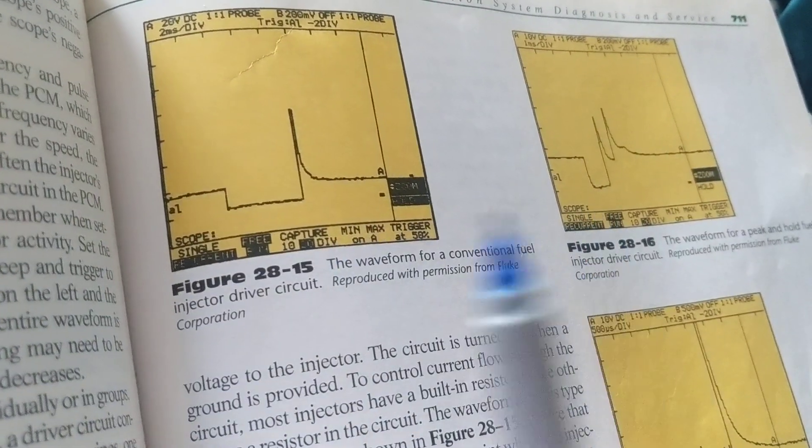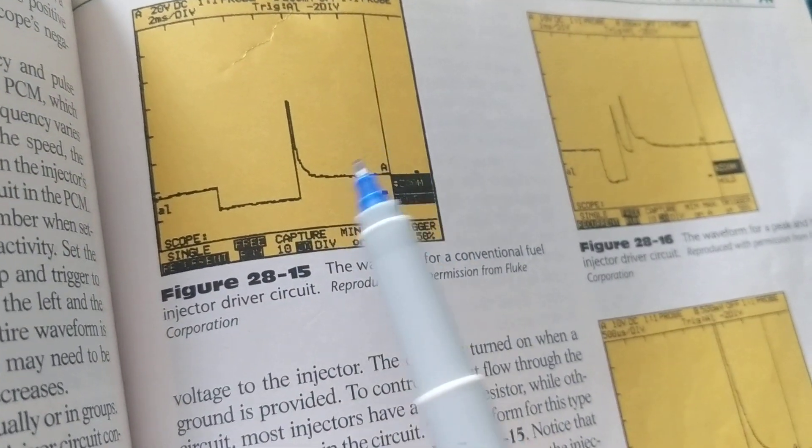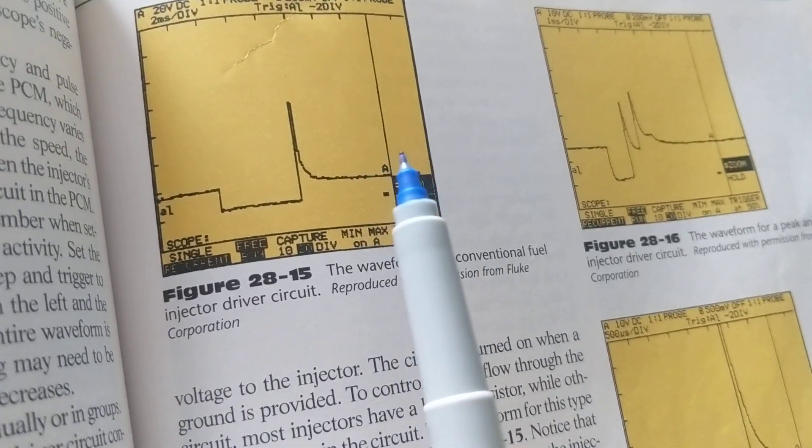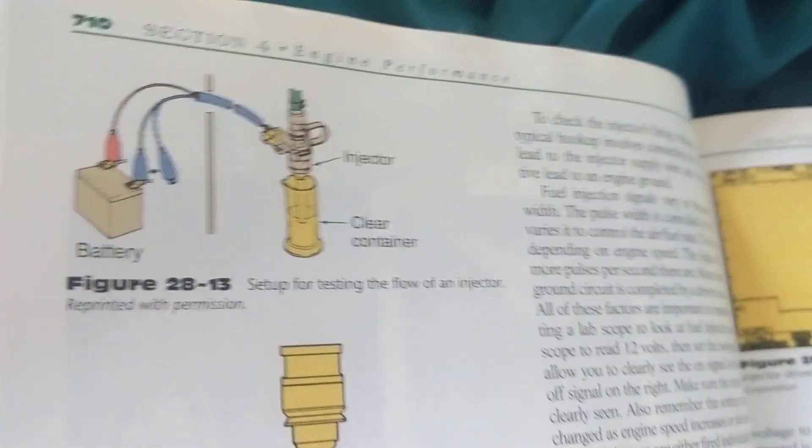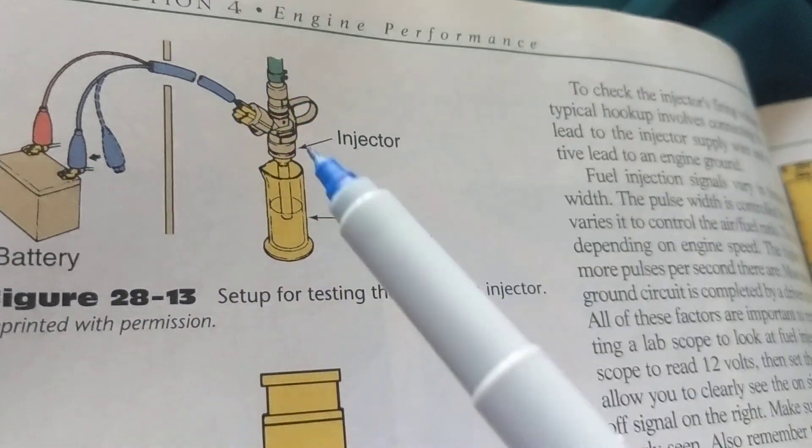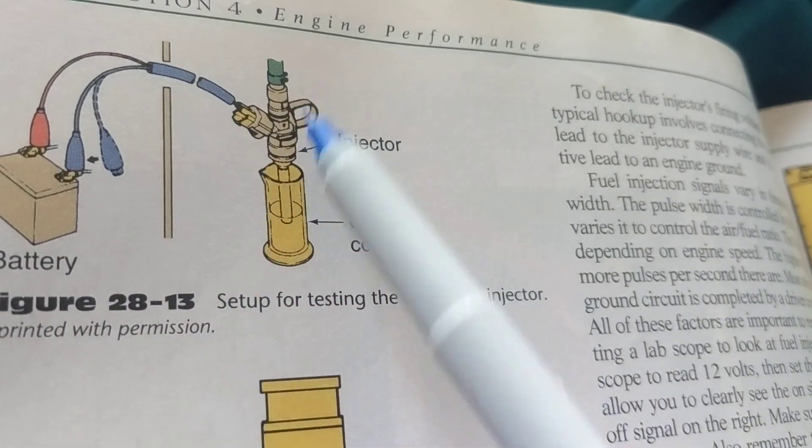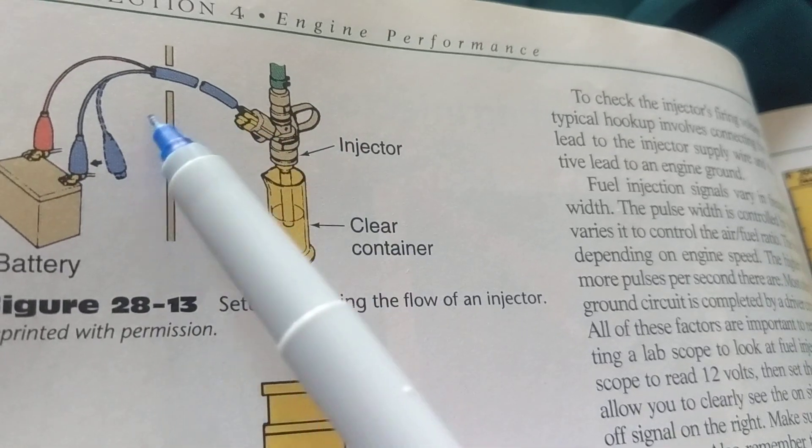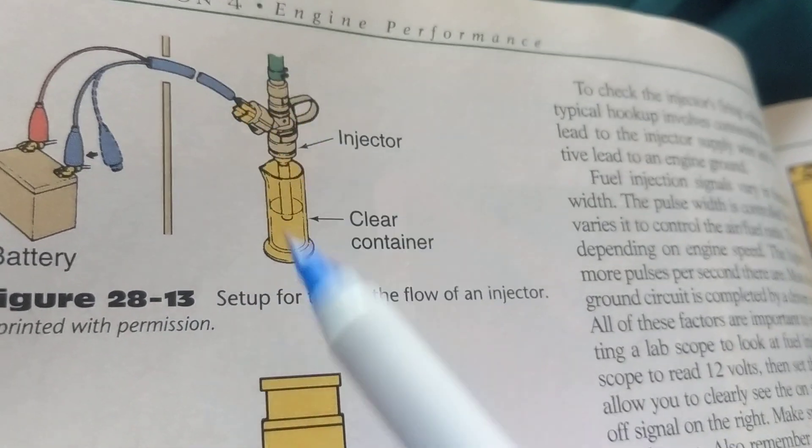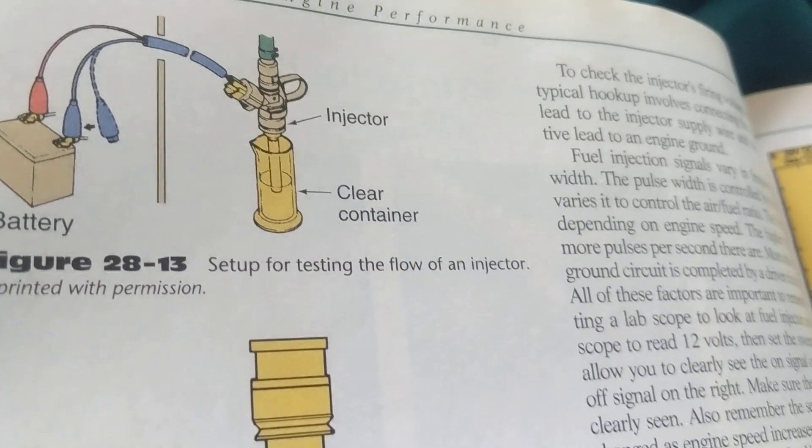Now, a pulse is a command from the computer telling the fuel injector when to turn on and off. The fuel injector itself, like we've all seen, has electrical connectors to it. This is the injector. It has a resistor in it. And these are the connectors coming from the battery and one from the negative coming from the computer.